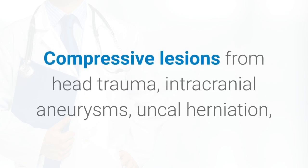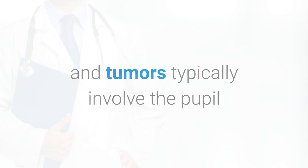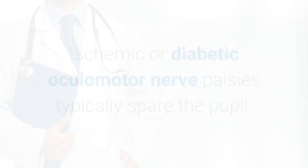Compressive lesions from head trauma, intracranial aneurysms, uncal herniation, and tumors typically involve the pupil as they affect the superficial parasympathetic fibers that innervate the pupil. Ischemic or diabetic oculomotor nerve palsies typically spare the pupil.